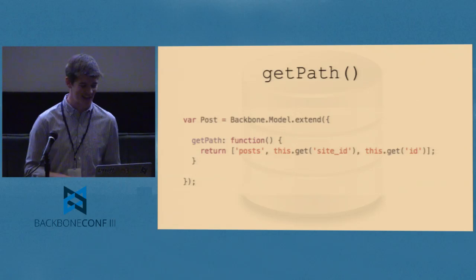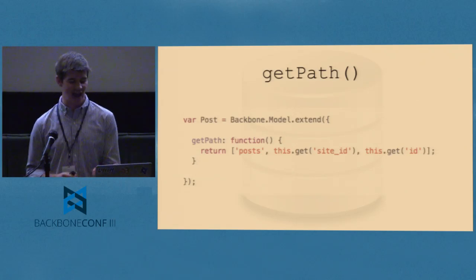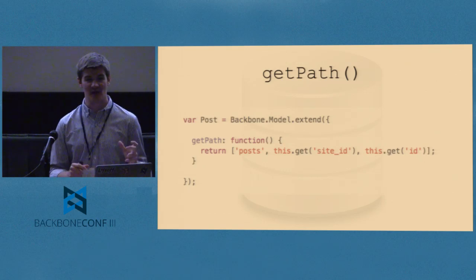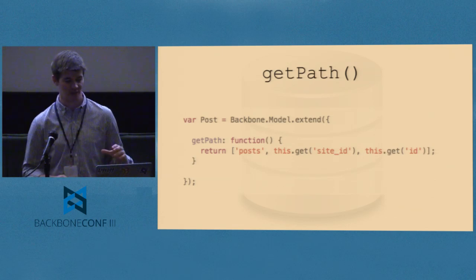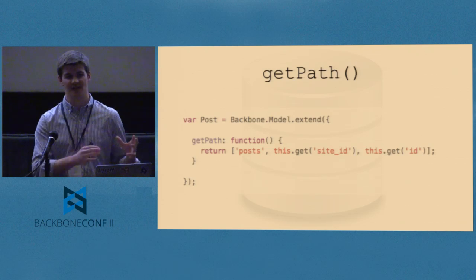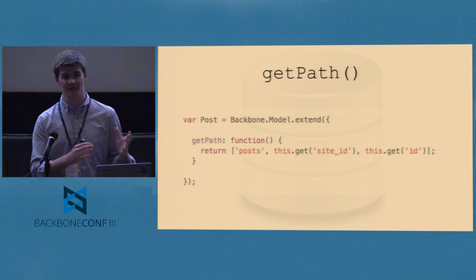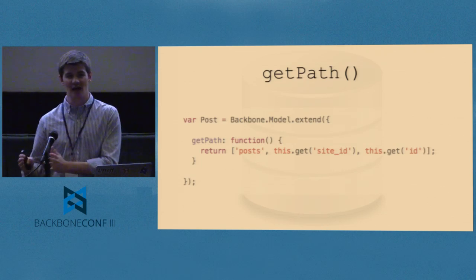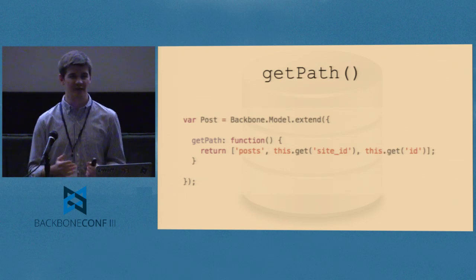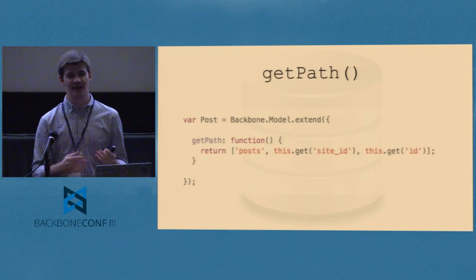It doesn't have to be flat — you can index things by what makes the most sense based on how you're working in your application. For example, if a post lives inside a site, you're only ever going to look it up inside that site. If a comment lives by a post, you're never going to look up the comment by its primary key — you just don't have a place where you'd know that.